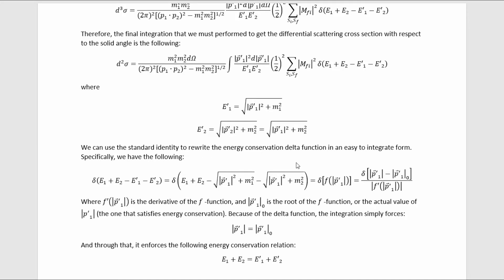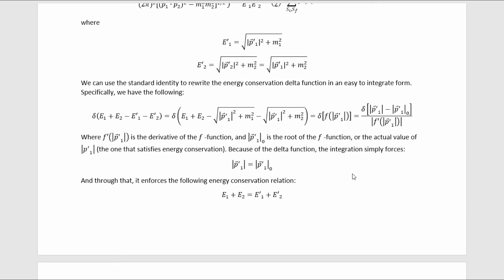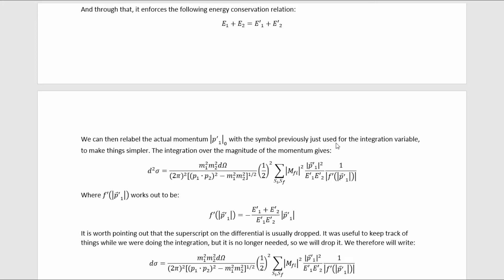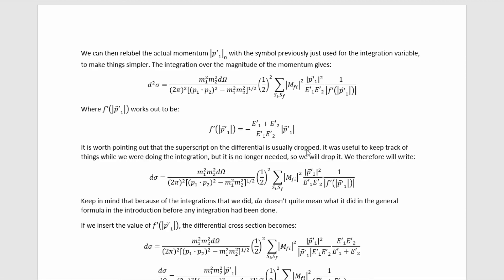We can use the standard identity to rewrite the energy conservation delta function in an easy-to-integrate form, specifically as one over |F prime| evaluated at the root P1 prime magnitude naught — the value of |P1'| satisfying energy conservation. Integrating over the delta function enforces this energy conservation relation. We then relabel the actual momentum with the symbol previously used for the integration variable to simplify notation. This gives us a result where F prime works out to a specific expression. It is worth noting that the superscript on the differential is usually dropped after the integration is complete.